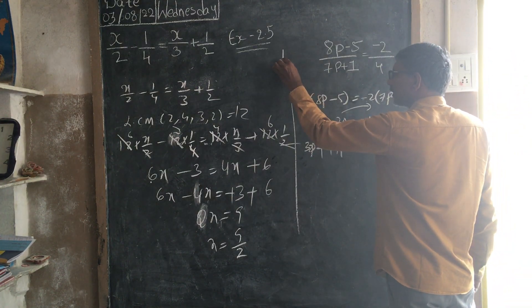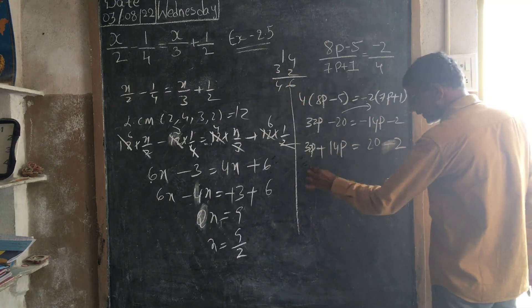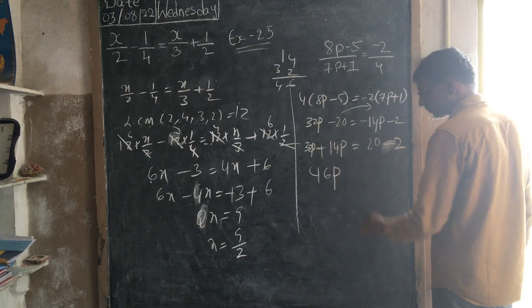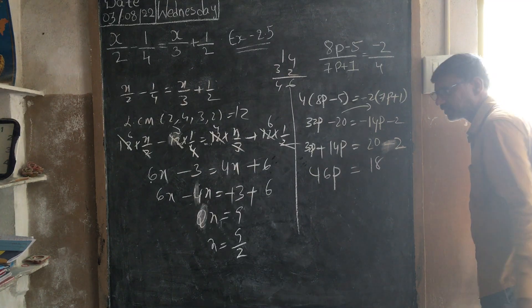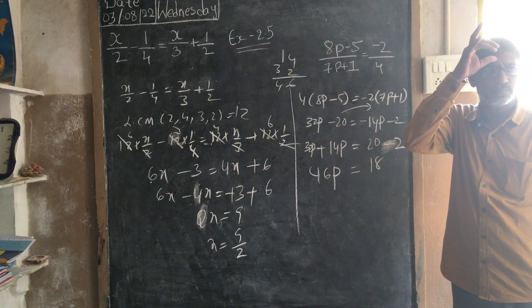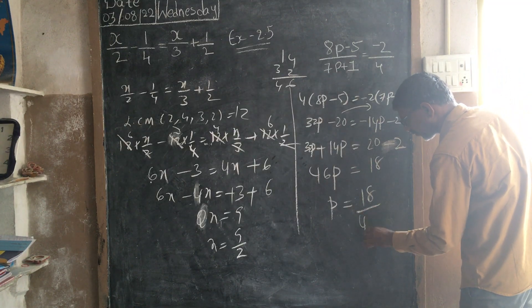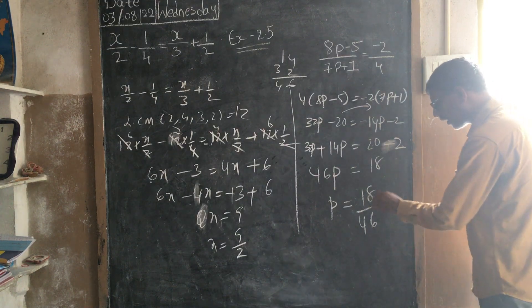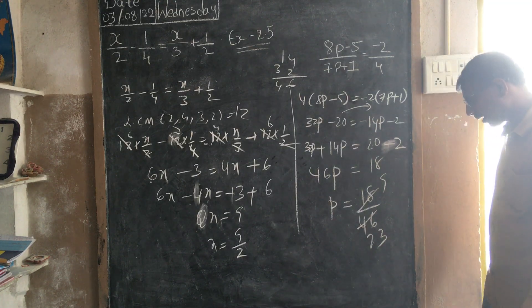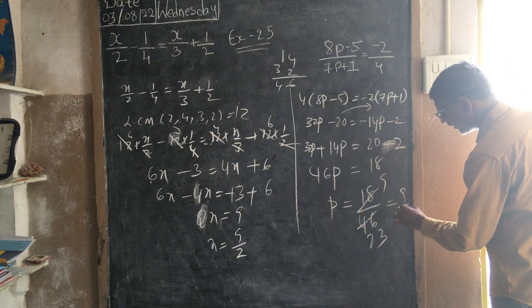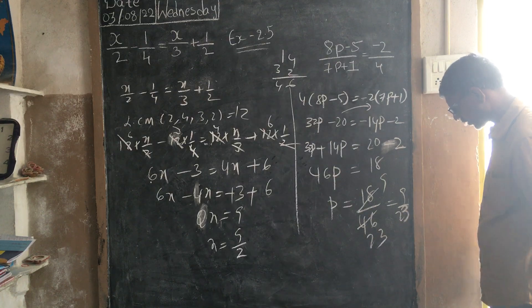So, 32 plus 14, how much? 46p, right? Is equals to, by taking difference, 18. 20 minus 2 is 18. Then, p is equals to 18 by 46. Two table, how many times? So, my p value is how much? 9 by 23. This is my answer. It's okay.